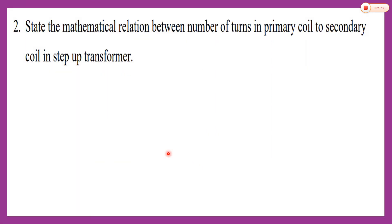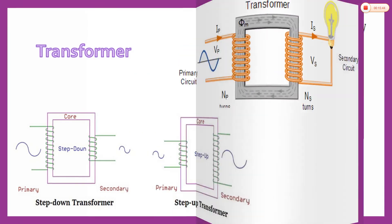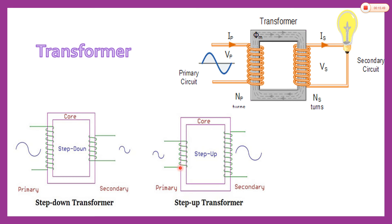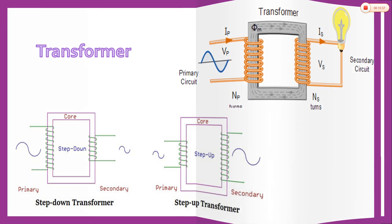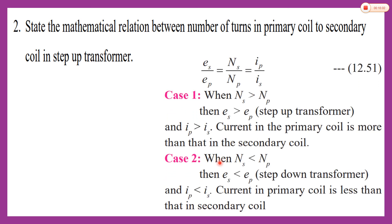The question is: state the mathematical relation between the number of turns in the primary coil and the secondary coil in a step-up transformer. In a step-up transformer, the number of turns in the secondary coil is more than in the primary coil. The ratio of output voltage to input voltage equals the ratio of number of turns in the secondary to the primary. When NS is greater than NP, the output voltage is more than the input voltage.